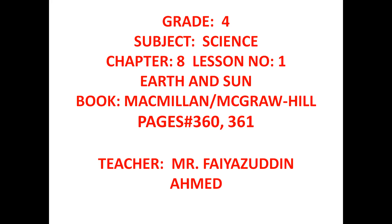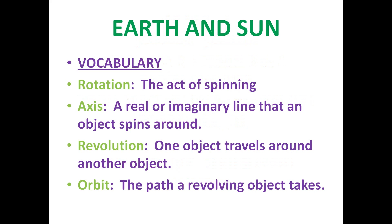Please open your book. We'll start with a brief look at the vocabulary. The key terms are: rotation, axis, revolution, and orbit. Rotation refers to the earth's spinning — the act of spinning. Axis is a real or imaginary line that an object spins around.